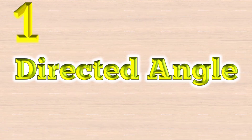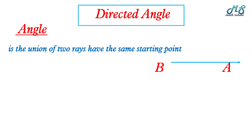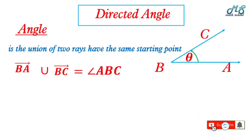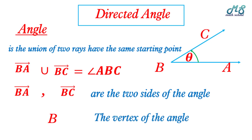Hello everybody, hello my students. Our lesson today is directed angle. Let's start. The angle is a union of two rays having the same starting point. The ray BA united with ray BC equals angle ABC. The two rays are called the two sides of the angle, and the middle point B is called the vertex of the angle.